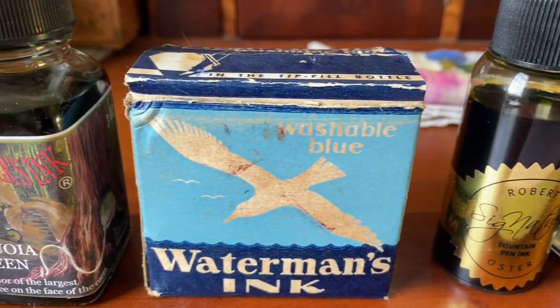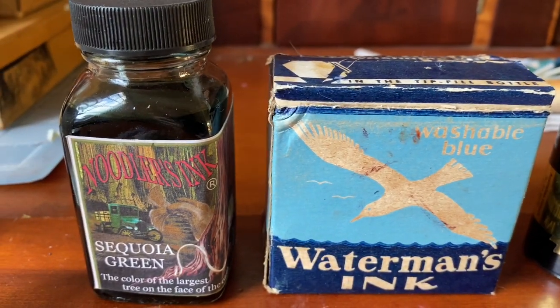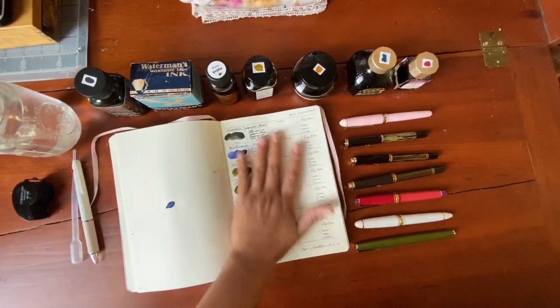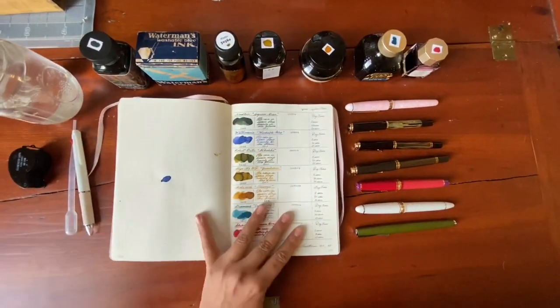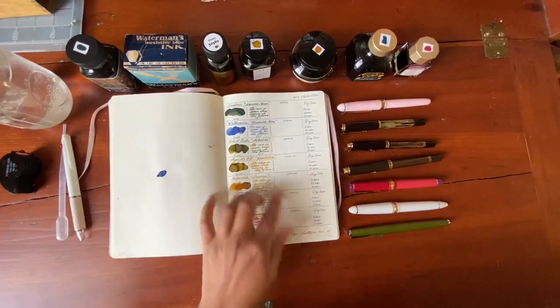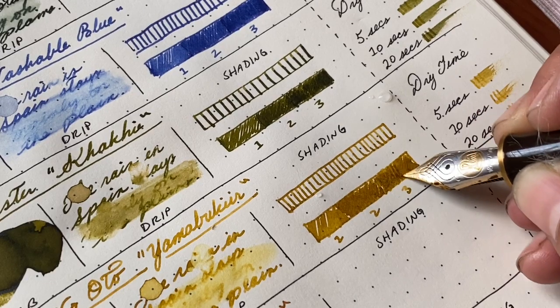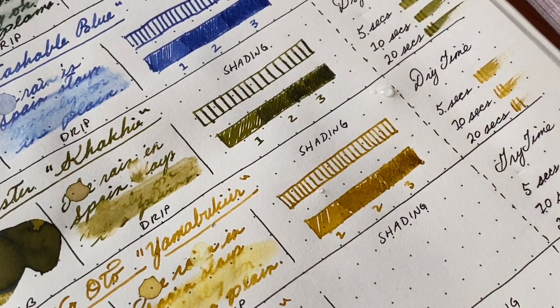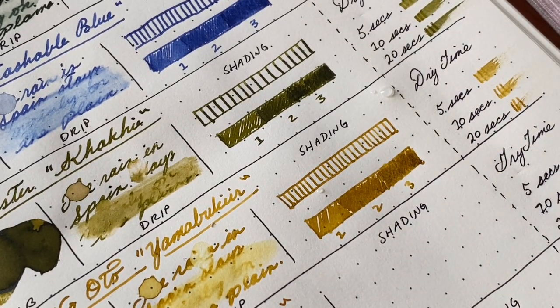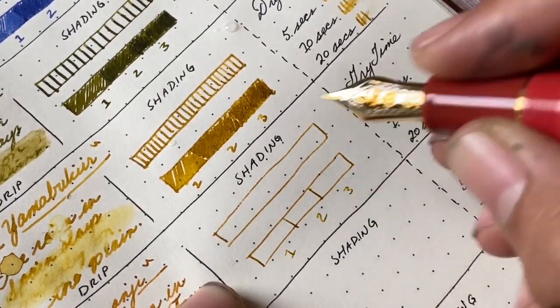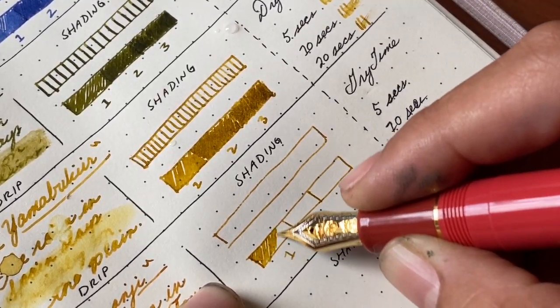Instead of starting with the top ink, which is a Noodler's ink, we'll just start somewhere in the middle. What I do is I like to make these little bars to show the shading of the ink and if there is any shading.